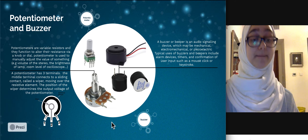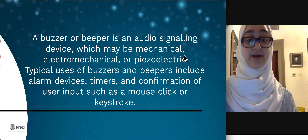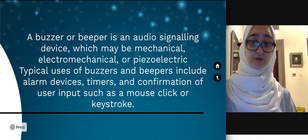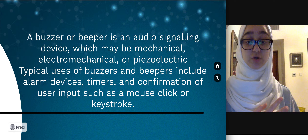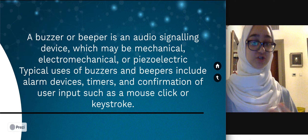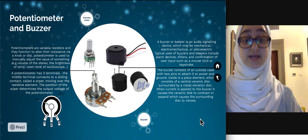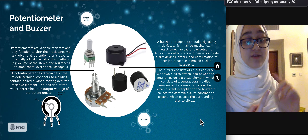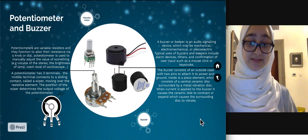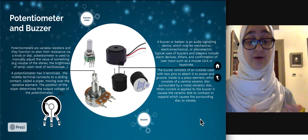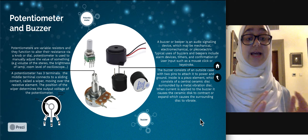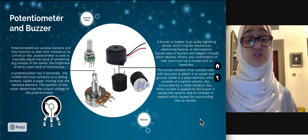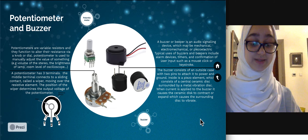My second gadget is the buzzer. The buzzer is an audible signal device which may be mechanical, electromechanical, or piezo-electrical. Typical uses include alarm devices, timers, or confirmation of user inputs such as a mouse click. The buzzer consists of an outside case as well as two pins that attach to the power and to the ground. Inside, the piezo element consists of a central ceramic disc surrounded by a metal vibrating disc. When a current is applied, it causes the ceramic disc to contract or expand, which then causes the surrounding metal disc to vibrate, producing the sound.